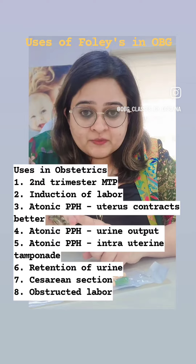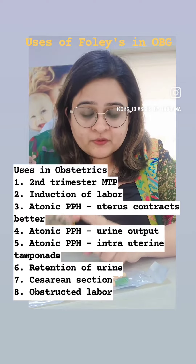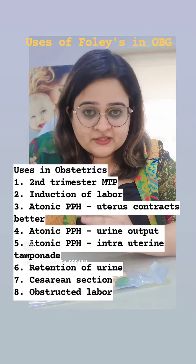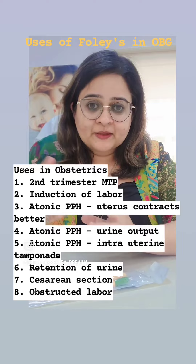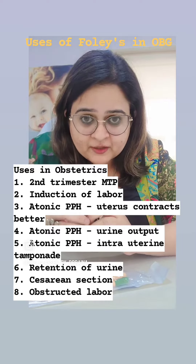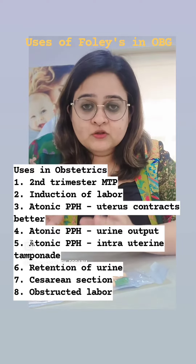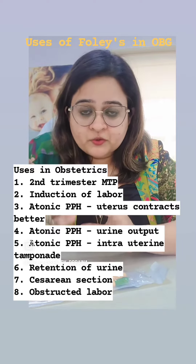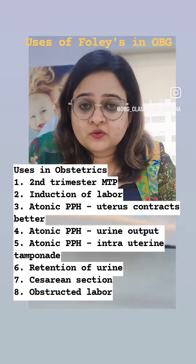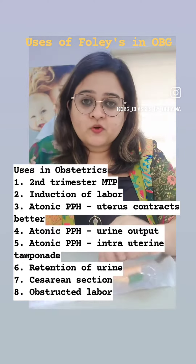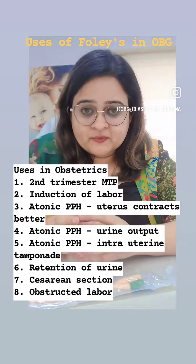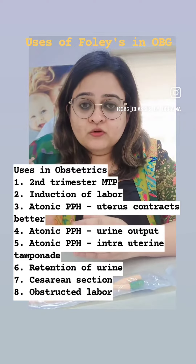In atonic PPH we also use Foley's catheter in several ways. One is to catheterise the bladder — emptying the bladder helps the uterus to contract better and also helps us monitor urine output. We can also fashion it into a condom catheter, which causes a tamponade inside and stops the bleeding.